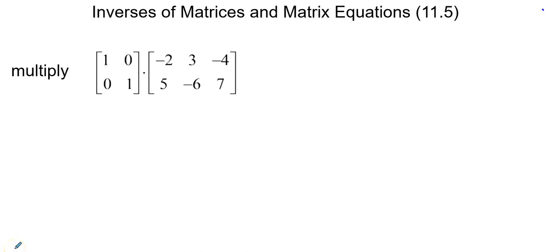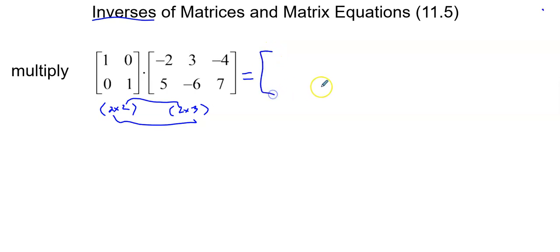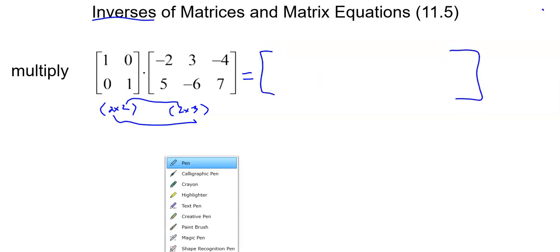Let's try to multiply these. Today we are going to talk about inverses and some pretty interesting stuff. So we have a 2 by 2 and a 2 by 3. The first thing we have to check before we multiply is: can we do it? Yes, we can. The dimensions of the answer will be 2 by 3, so I'm expecting the answer to be a 2 by 3 matrix.